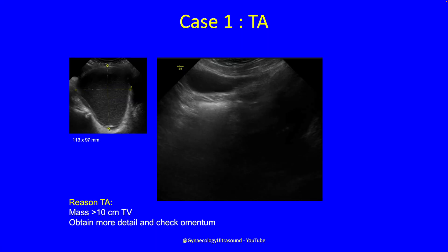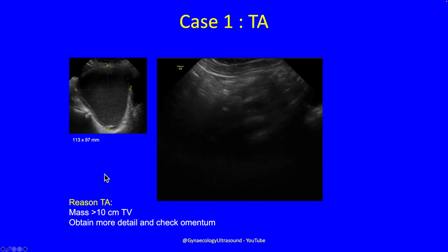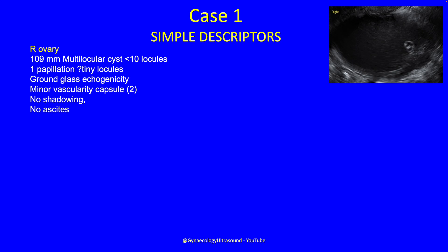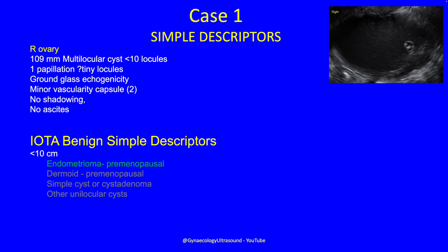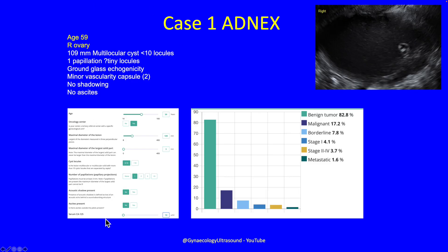Transabdominally, I didn't pick up any further worrying detail about the cyst. Does it fit any of the simple descriptors? The answer is no — for starters it's larger than 10 centimetres, so immediately it doesn't fit a single descriptor. I then entered all these items into the risk calculator, and it gave me a risk of malignancy of 17%.